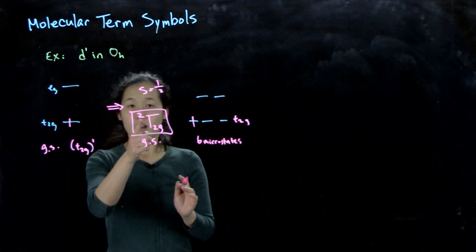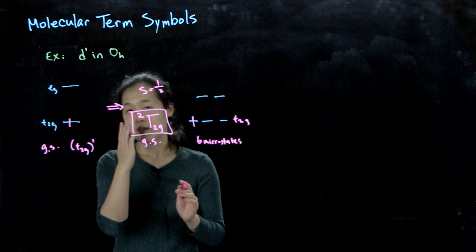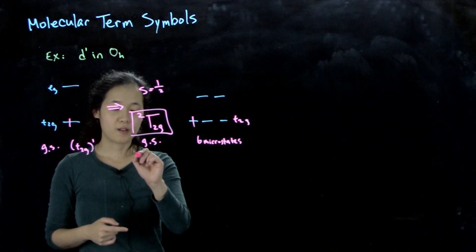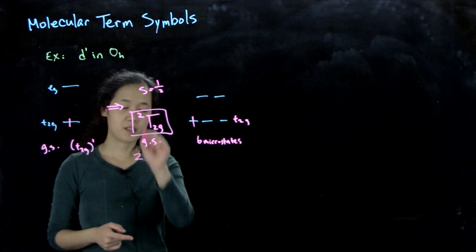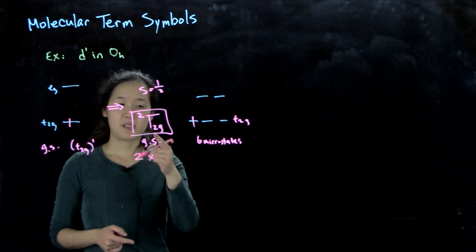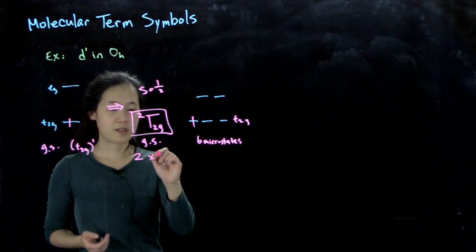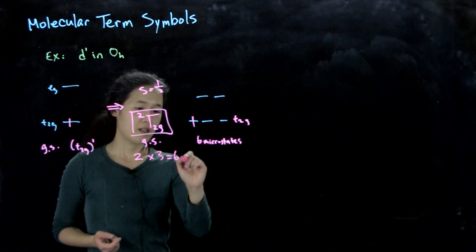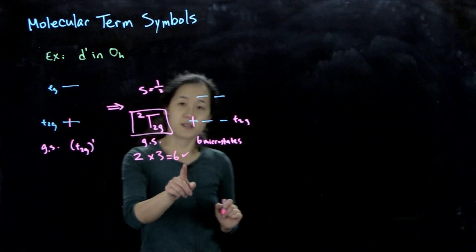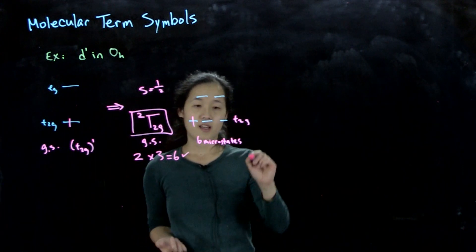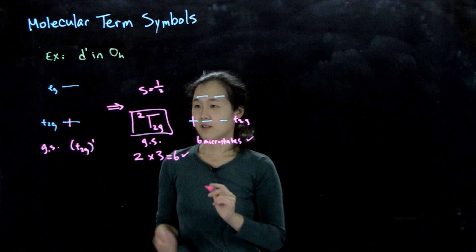And then you can see here, the spin multiplicity is 2 because we have spin 1/2. So it's 2s plus 1 times 2, which is there. And then the orbital multiplicity, so t is triplet degenerate, so it's 3. This equals 6. So our ground state is 6-fold degenerate, and then we have our 6 microstates. So this is our ground state.